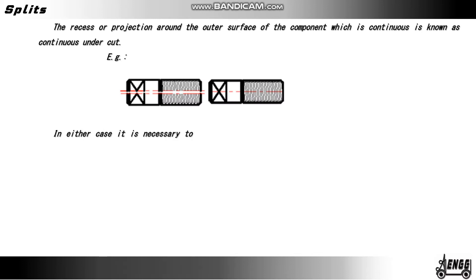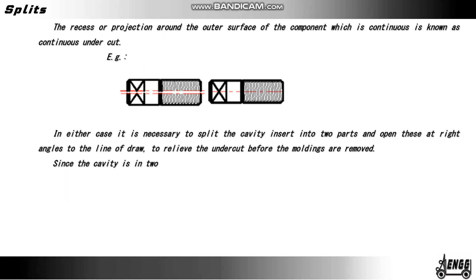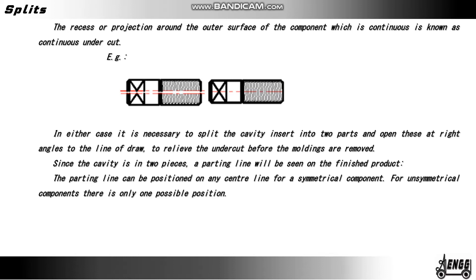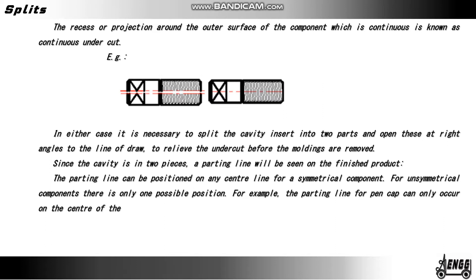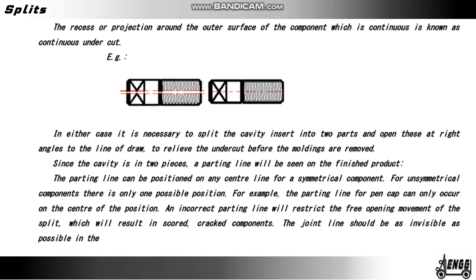In either case, it is necessary to split the cavity inserts into two parts and open these at right angles to the line of draw to relieve the undercut before the moldings are removed. Since the cavity is in two pieces, a parting line will be seen on the finished product. The parting line can be positioned on any center line for a symmetrical component. For an unsymmetrical component there is only one possible position — for example, the parting line for a pen cap can only occur at the center position. An incorrect parting line will restrict the free opening movement of the split, which will result in scored or cracked components. The joint line should be as invisible as possible in the molding.